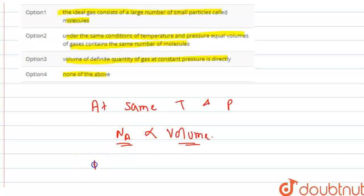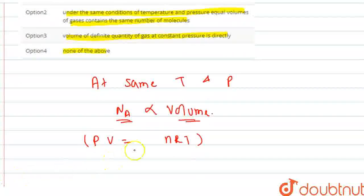So, we can see if we have our ideal gas equation PV equals nRT. This n is equal to... If we talk about number of molecules, let us suppose nm is denoted.